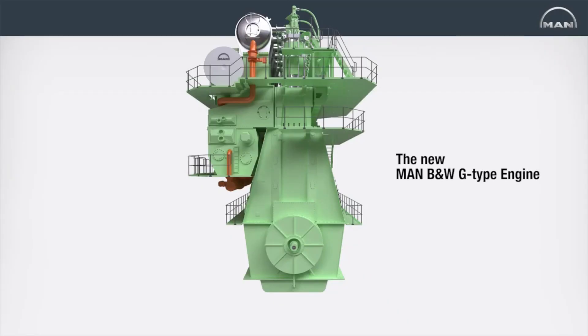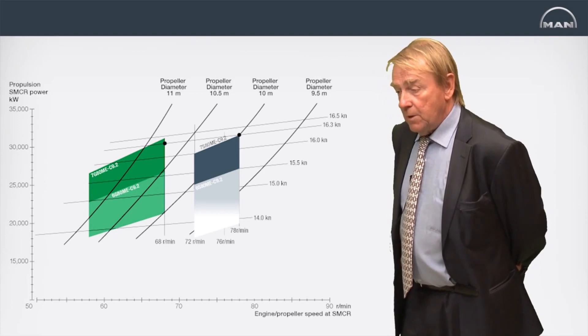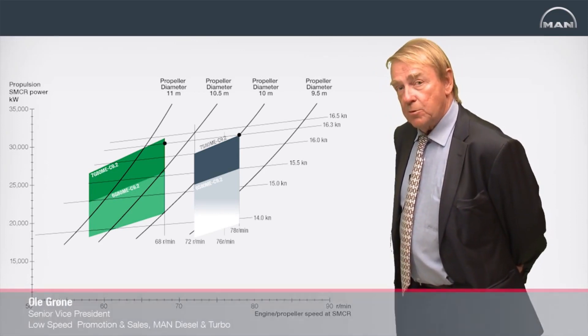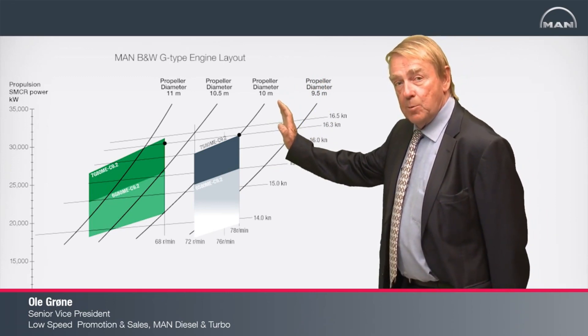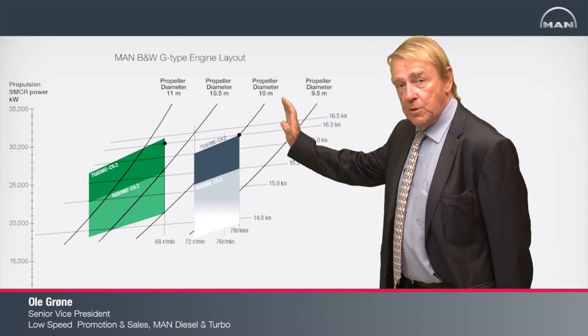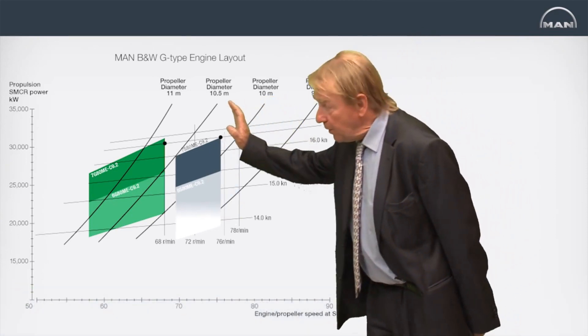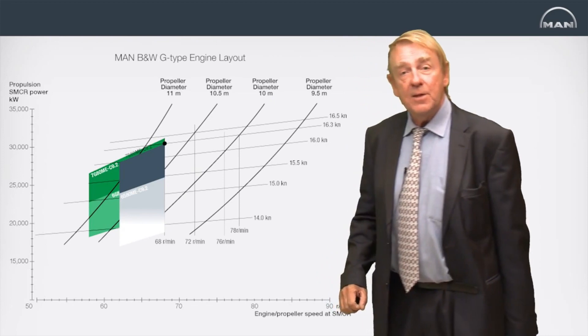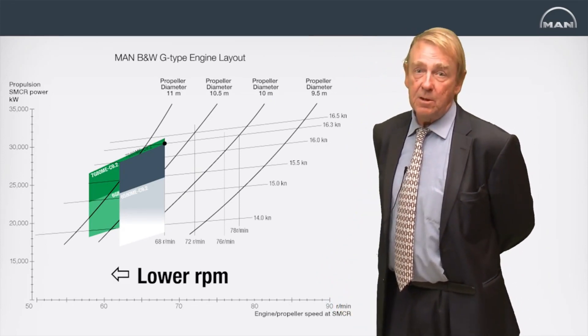With regard to the G engines, the essence is that we utilize a lower RPM. We have always been able to utilize lower RPMs by using our layout diagram, which has very flexible layout principles. What we do now with the G engines is that we push the whole diagram a little to the left. Thereby we get lower RPMs and better efficiency of the propeller.